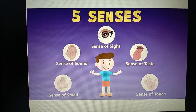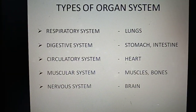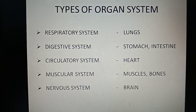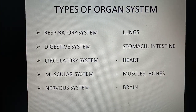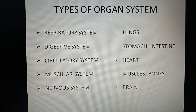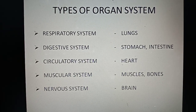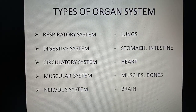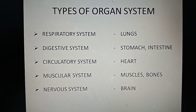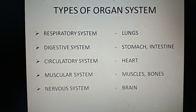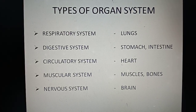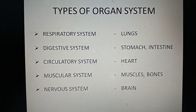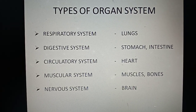The different types of organ systems we have studied are: the respiratory system, where the main organ involved is the lungs. It brings in air from the atmosphere and passes oxygen into the bloodstream. In the digestive system, the main organs involved are the stomach and intestine. The food we eat enters our stomach and gets broken down into smaller pieces. The intestine helps to absorb the nutrients from the food.